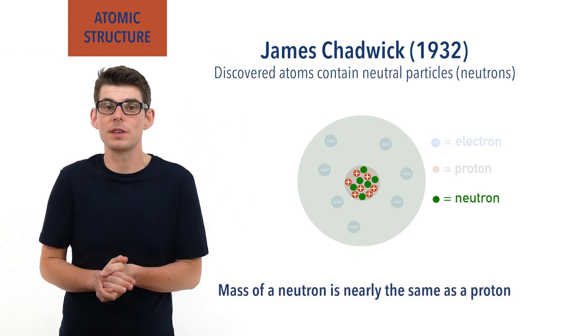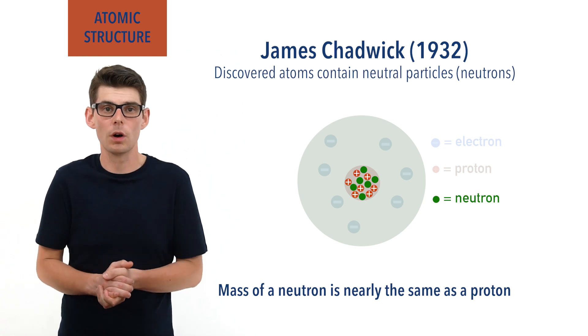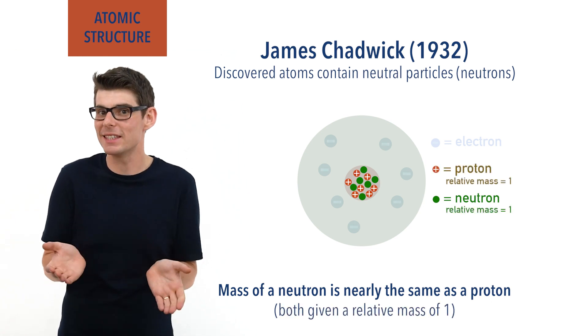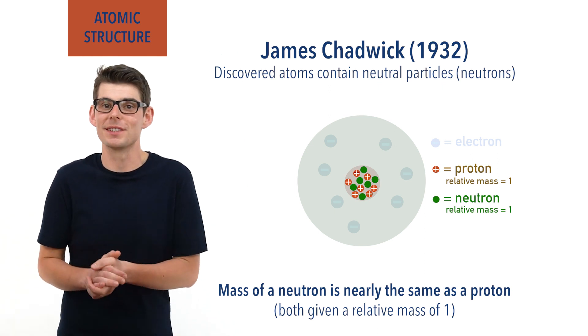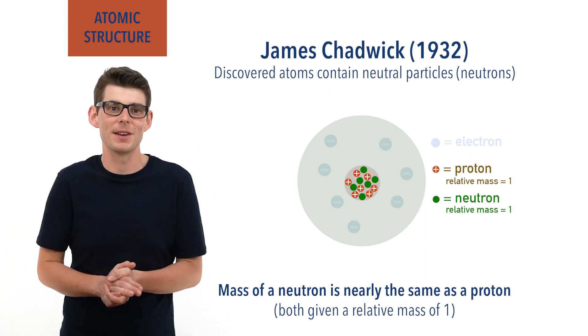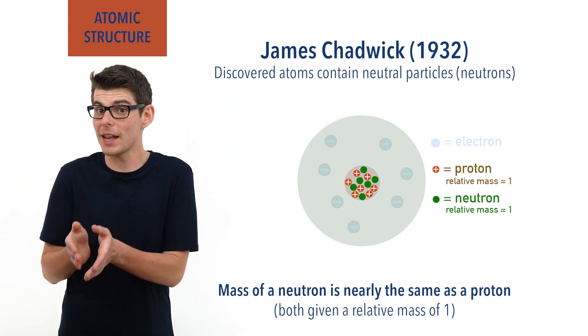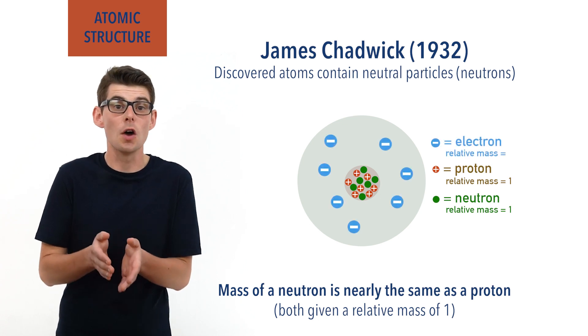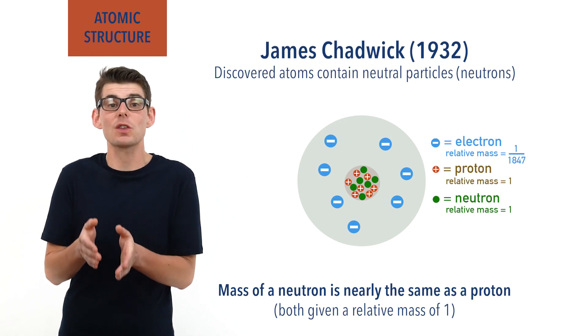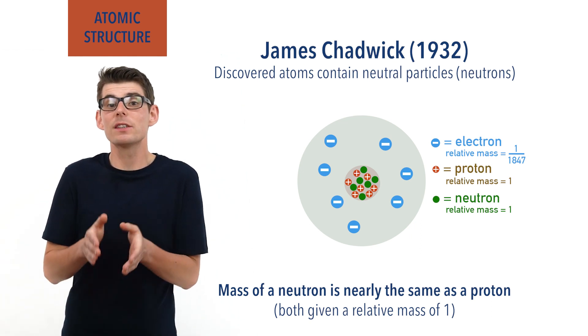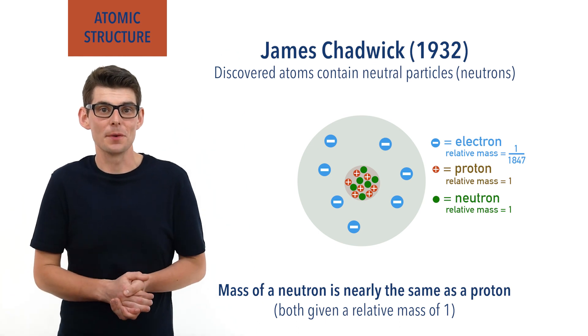Because of how close these masses are to each other, they are both now assigned a relative mass number of one. It's a bit lazy really, as they don't have exactly the same mass. However, this only really causes a headache for very precise measurements. Compared to both protons and neutrons, the relative mass of an electron is given as 1 over 1840. Because, as we've just found out, the actual mass of a single electron is 1840 times smaller than the actual mass of a single proton.